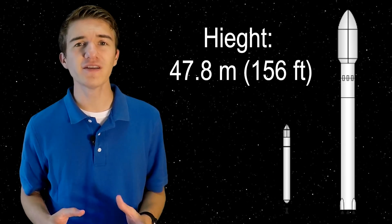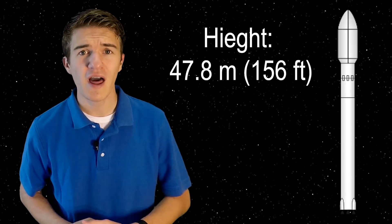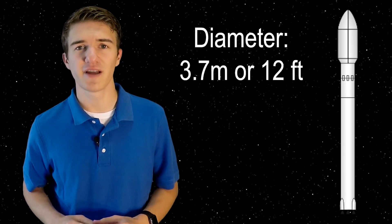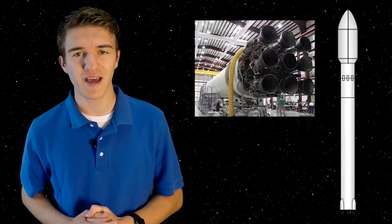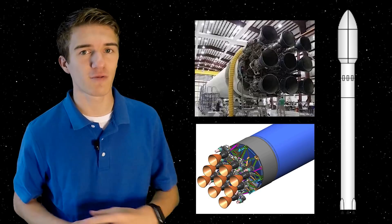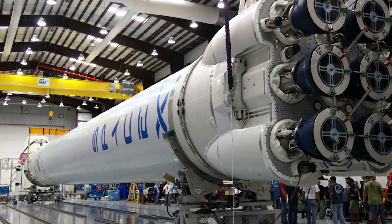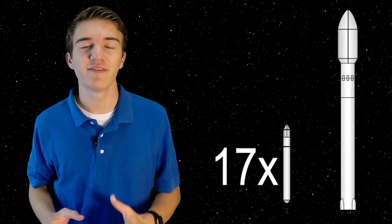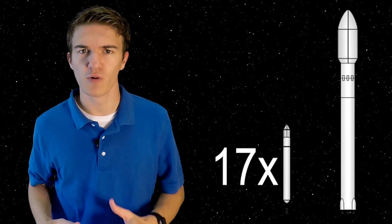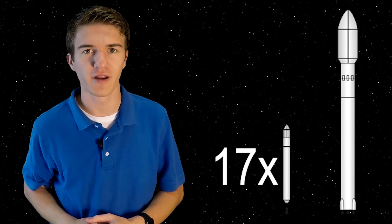So let's step through some of these changes. The first major one being the size. It stood 47.8 meters tall and 3.7 meters in diameter. The first stage made up of 9 Merlin 1C engines in a 3x3 arrangement. This being 8 more than the Falcon 1, just having one engine. In addition, the Falcon 9 could take 17 times more mass to low earth orbit than the Falcon 1 could, making it a much more powerful rocket.